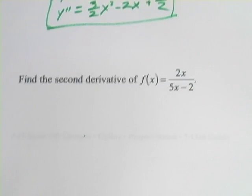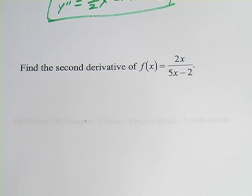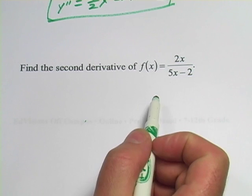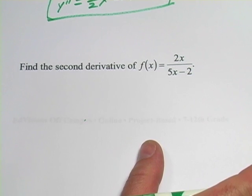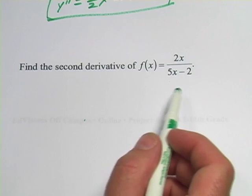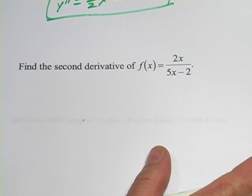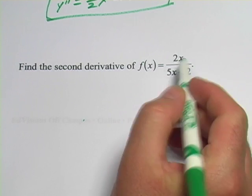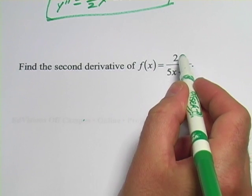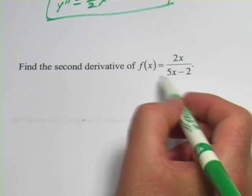Alright, let's take a look at another one. Now this one involves a quotient, so we're going to have to apply the quotient rule, which can get a little bit complicated. So we're going to have to keep our eyes out for ways to simplify this as we go along. But let's give it a shot. And remember, the quotient rule is low d high minus high d low all over low squared.